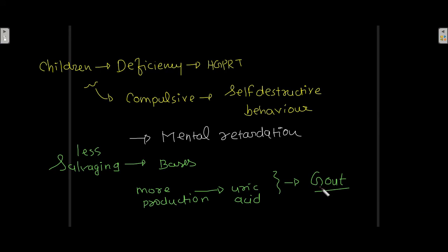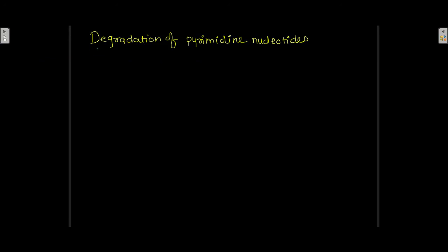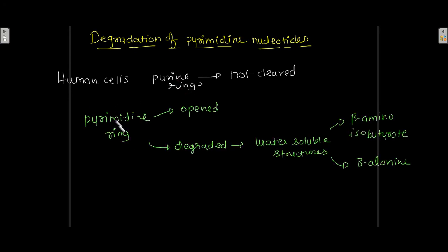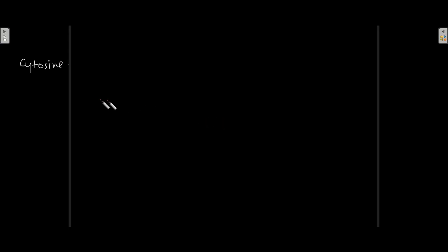In human cells, purine rings are not cleaved. However, pyrimidine rings can be opened and degraded into water-soluble structures such as beta-alanine or beta-amino isobutyrate. Cytosine, a pyrimidine, is first converted into uracil in the catabolism pathway.